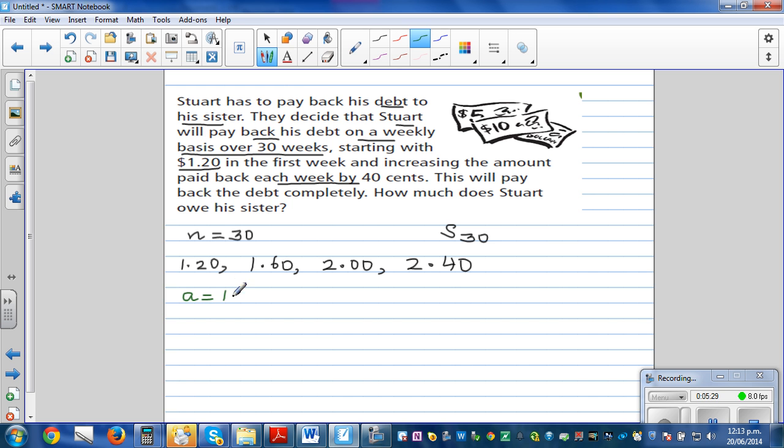a is $1.20 or 1.20 in dollars. So d is 0.4 because this you're writing in dollars, so 40 cents is the same as writing 0.4.